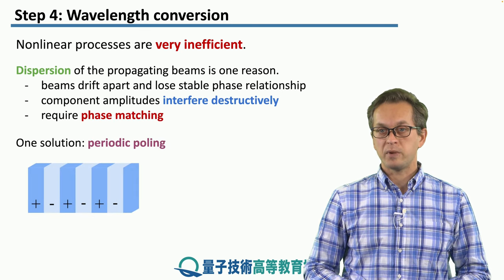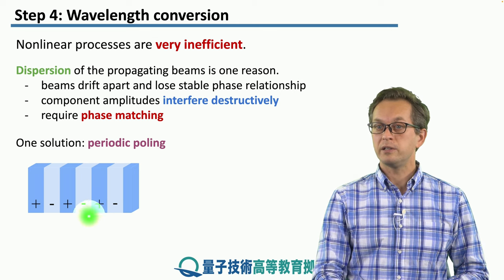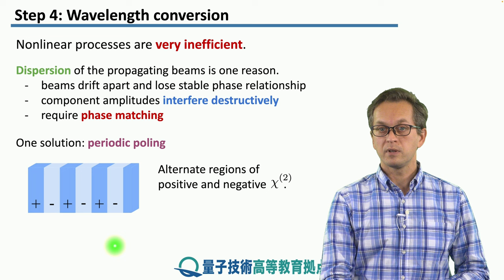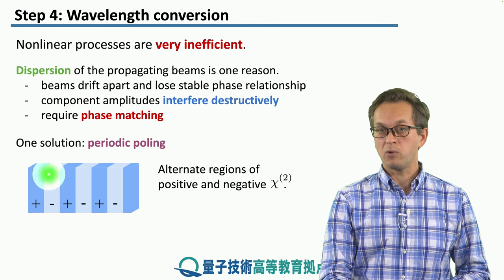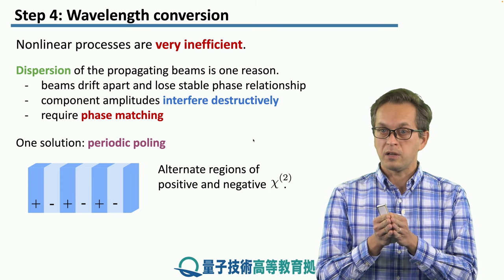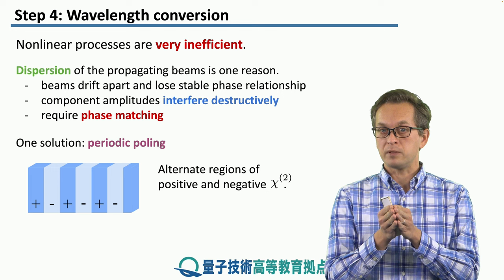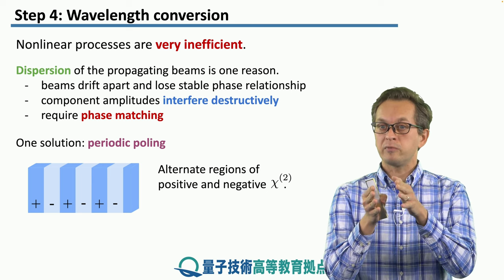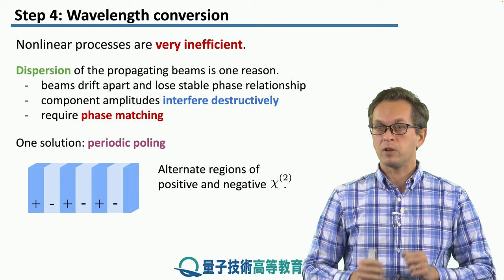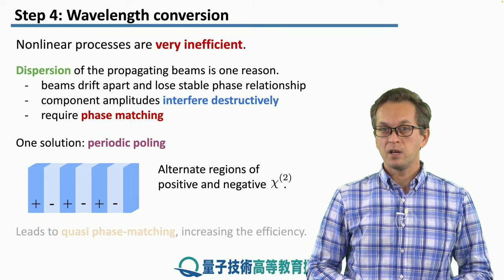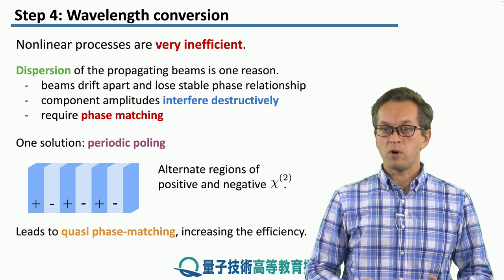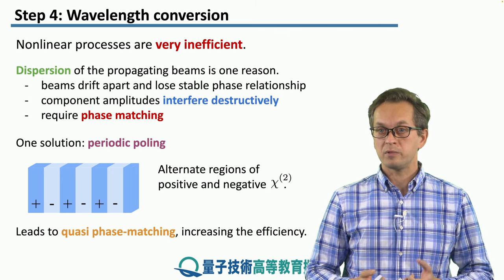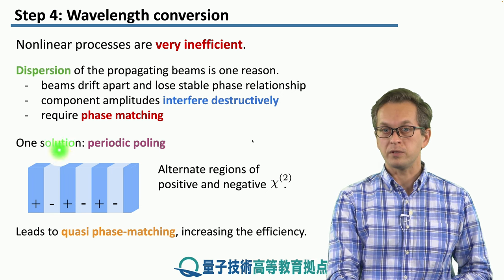One way of achieving phase matching is the following: we can use alternating positive and negative signs of the chi2 crystal to produce a specific structure. This technique is known as periodic poling. As the beams enter the positive chi2 part of the structure, they drift apart and lose phase relationship. But at that point they enter the negative part and drift closer together again, maintaining or getting closer to the proper phase-matched relationship. This is not quite 100% effective — it's known as quasi-phase matching — but it does substantially increase the efficiency of the nonlinear process, resulting in a substantial signal at the end of this procedure.